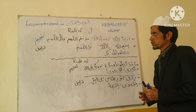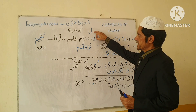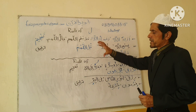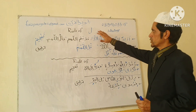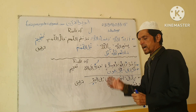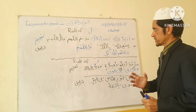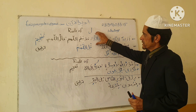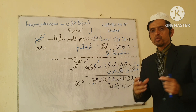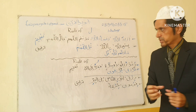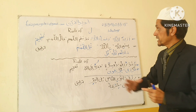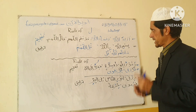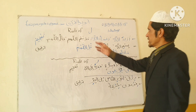In this class I will teach you two rules — one related to the letter Lam and one related to Ra. These are called temporary characteristics (Sifat-i-Arza) because these rules are applied only in certain conditions. If that condition is available, the rule is applied; if the condition is not available, the rule is not applied.